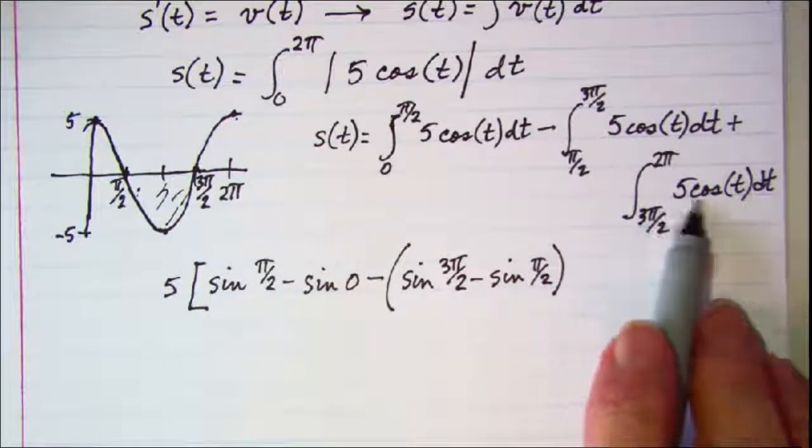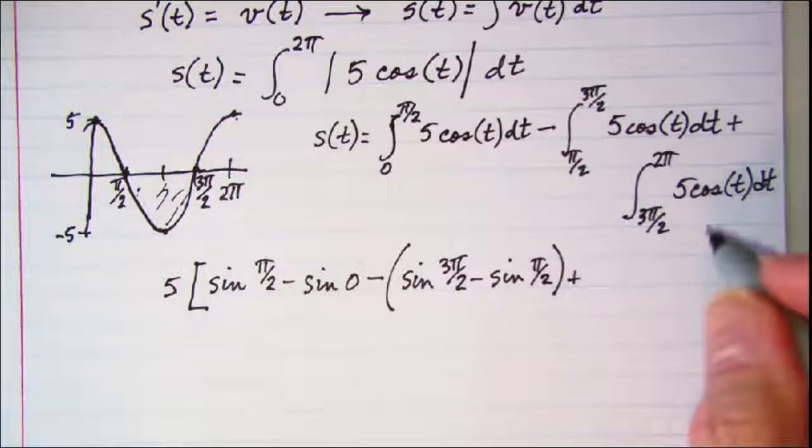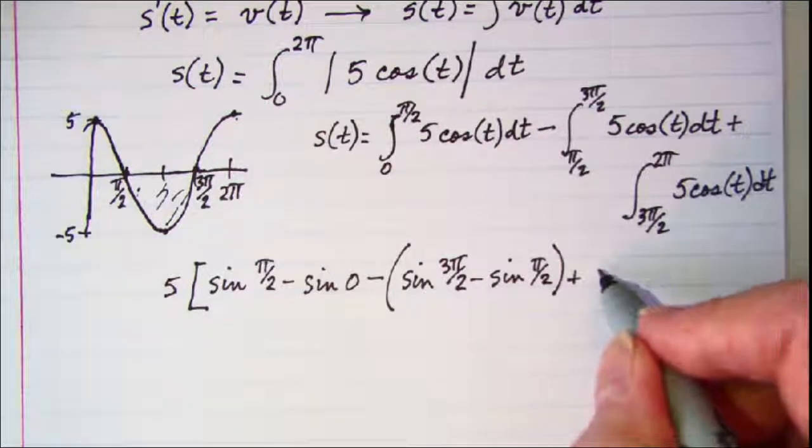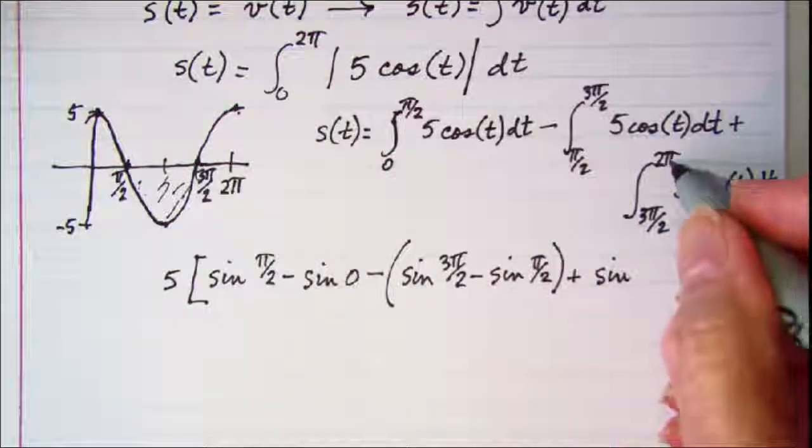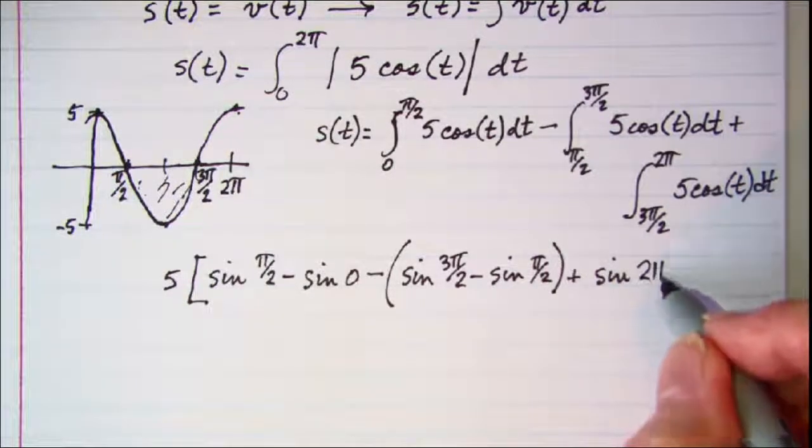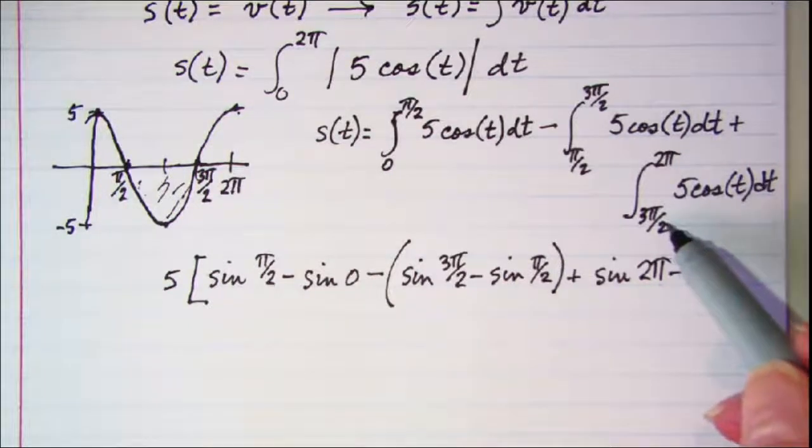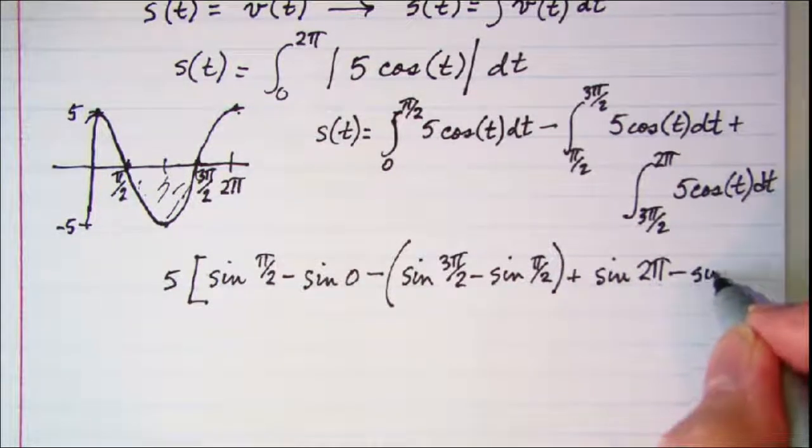And then this last part, I pulled my 5 out in front. So I have the sine of 2 pi subtract the sine of 3 pi over 2.